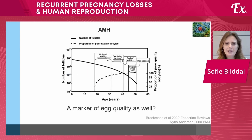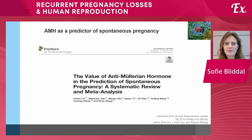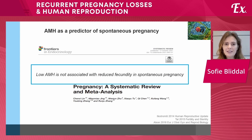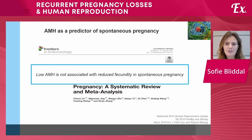What we and others have speculated is whether AMH could be a marker of egg quality. We know that with increasing maternal age, the quality of the eggs also decreases, and so does AMH. In one interesting study assessing the value of AMH in prediction of spontaneous pregnancy, the conclusion was that low AMH is not as such associated with reduced fecundity in spontaneous pregnancy. So even with a low AMH, it's possible to achieve pregnancy and live birth.